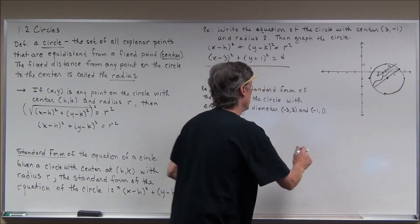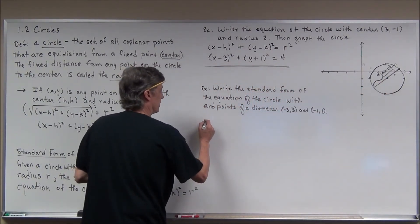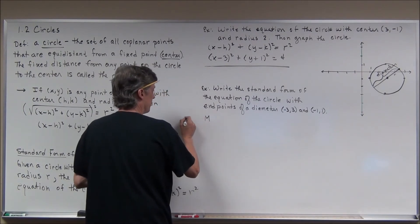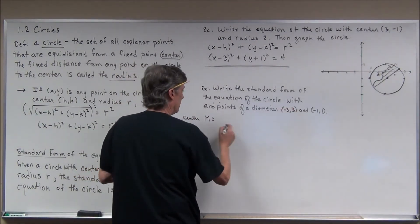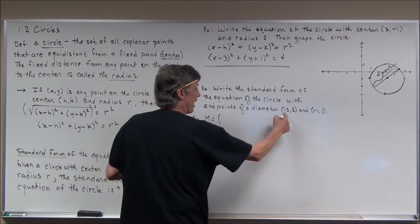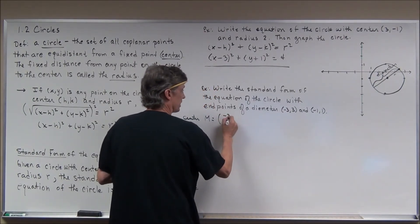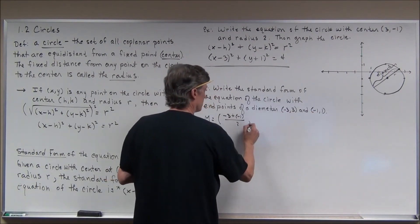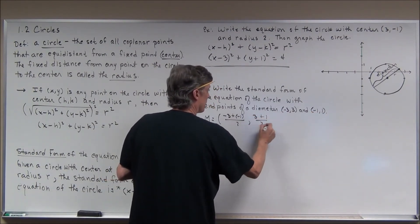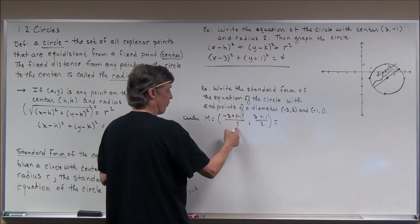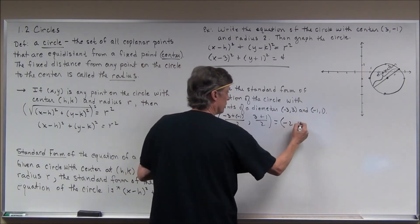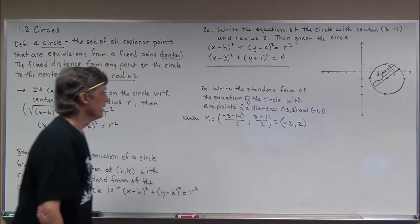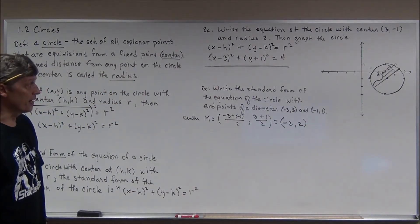To find the center, I take the midpoint of the diameter. Since I have the endpoints of the diameter, I'll use the midpoint formula — you average the x-values and average the y-values. Adding the x-values and dividing by 2 gives negative 4 over 2, which is negative 2. Adding the y-values gives 3 plus 1 divided by 2, which is positive 4 over 2, or positive 2. So my center is (-2, 2).